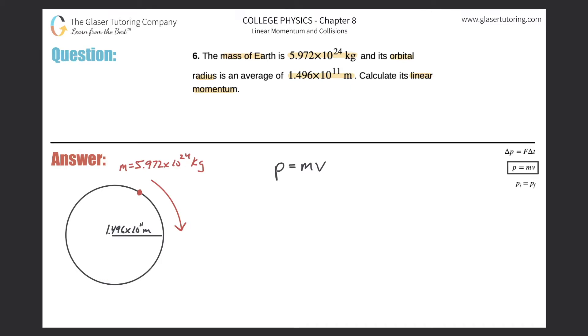So do we know the linear velocity in this problem? No, they didn't tell it to us, and we have to remember that Earth is traveling here on an orbital path, traveling around a circle.